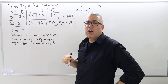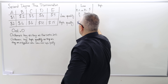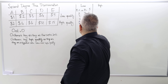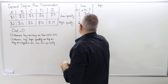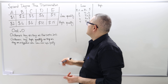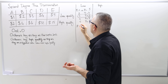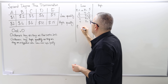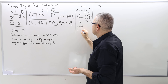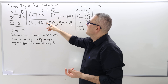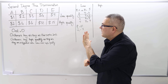If the price is $4, two people — D and E — buy, and profit is $8. If the price is $5, profit is only $5. So the profit-maximizing price for low quality is $3, selling three units to customers C, D, and E. We could calculate consumer and producer surplus, but I'll leave that aside.